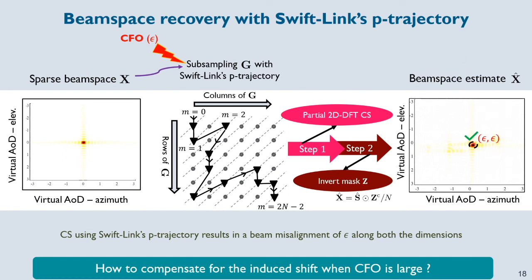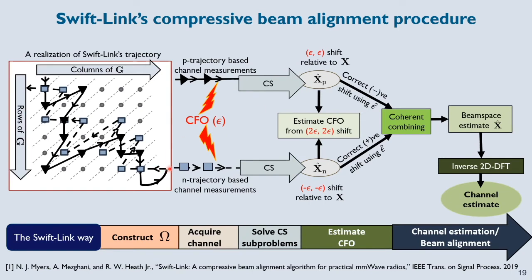This idea works well when the CFO error is small. When the CFO is large, SwiftLink uses a simple compensation strategy: it splits the trajectory into two parts. The first part is the P trajectory going in the forward direction, resulting in an epsilon-epsilon shifted beam space estimate. The second part goes along the opposite direction, randomized along 45-degree contours, resulting in a negative-epsilon, negative-epsilon shift. From X_P_hat and X_N_hat — which are shifted versions of each other — it is possible to estimate the CFO and compensate for it. Finally, measurements from both components are coherently combined to get a better channel estimate.